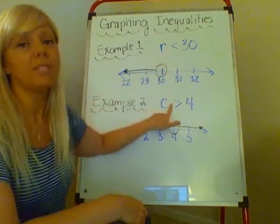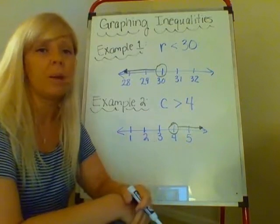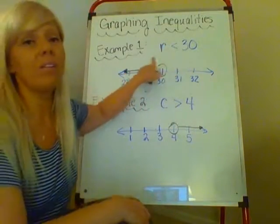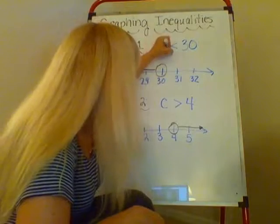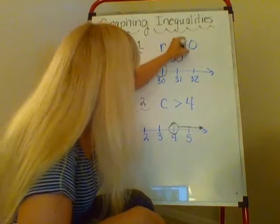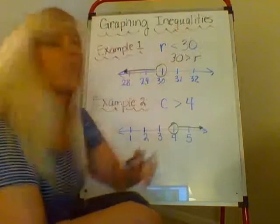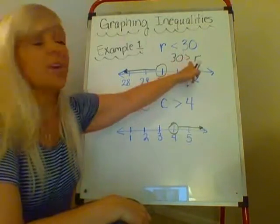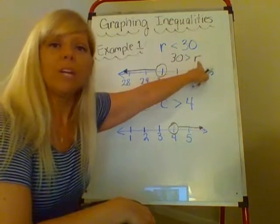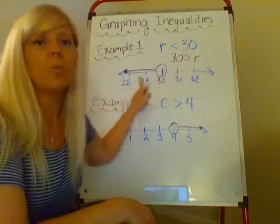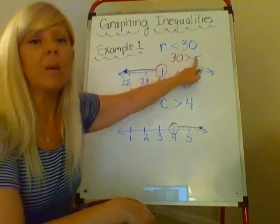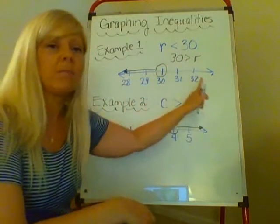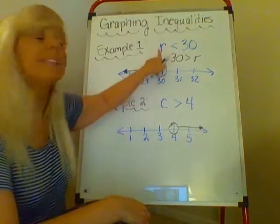Because I can rewrite this inequality as 30 is greater than r. So 30 is greater than r, well what number can I still put for r? I can still put 29. And here my inequality is not pointing the same direction. So really think what number makes this work and that's the direction you need to go.